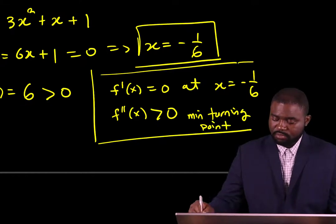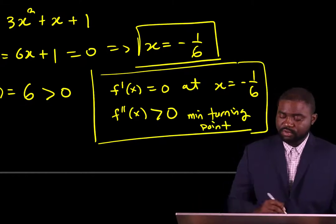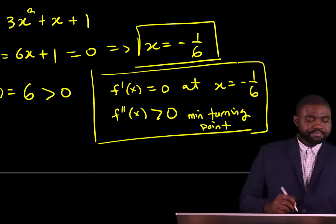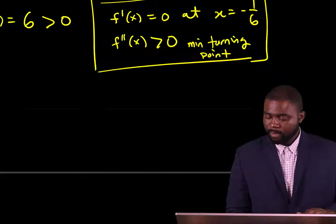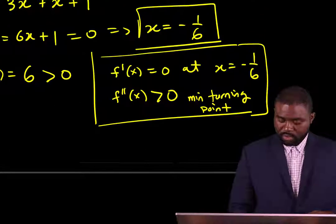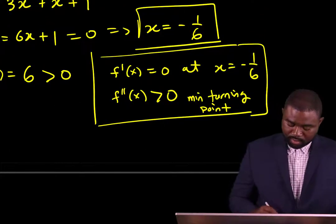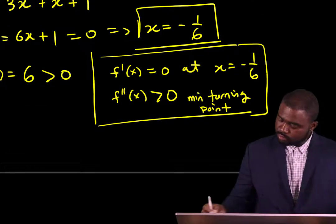So we have seen that f prime of x is equal to 0 at x equal to negative 1 over 6, and f double prime of x is greater than 0 irrespective of the value of x. That means that this particular point is a minimum turning point.